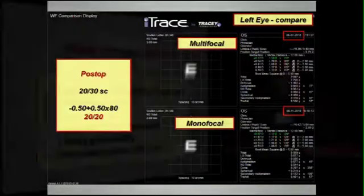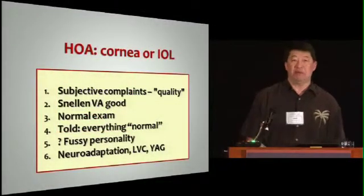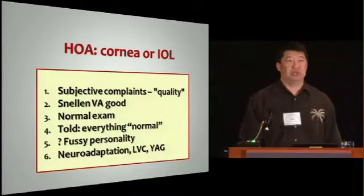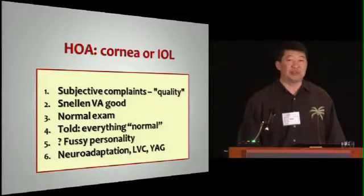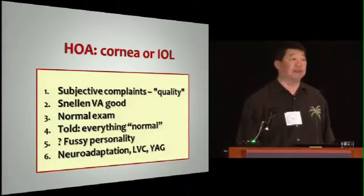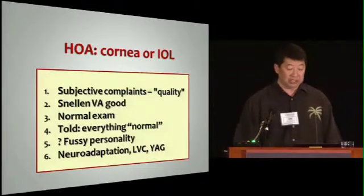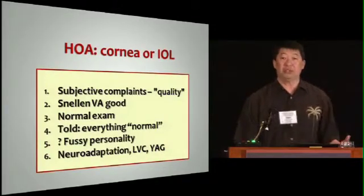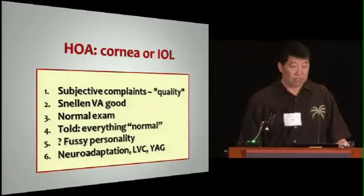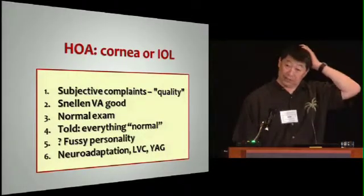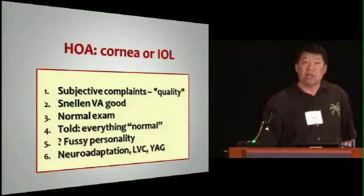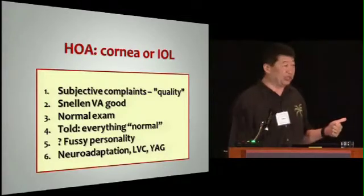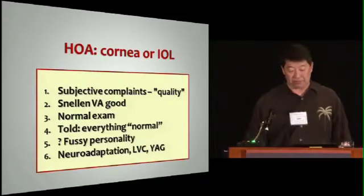What are the lessons of the cases I've shown you? There are people running around right now with monofocal — but especially multifocal — lenses that have high-order aberrations, either in their cornea or coming from the IOL for some reason. The Snellen acuity is good, the exam is normal, and so everyone's going to tell them, 'You have a normal eye.' The doctor's thinking, 'This is another fussy person — this is the worst part about premium IOLs.' And we offer them neuroadaptation, 'You'll get used to it,' laser vision correction, or a YAG capsulotomy.